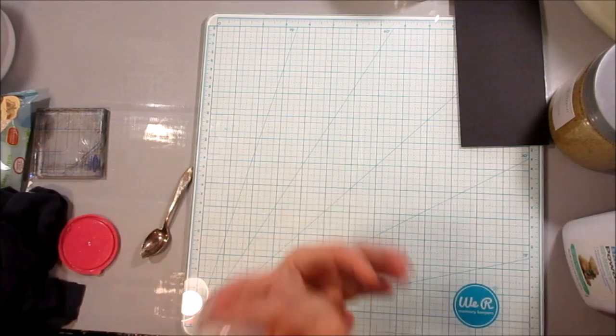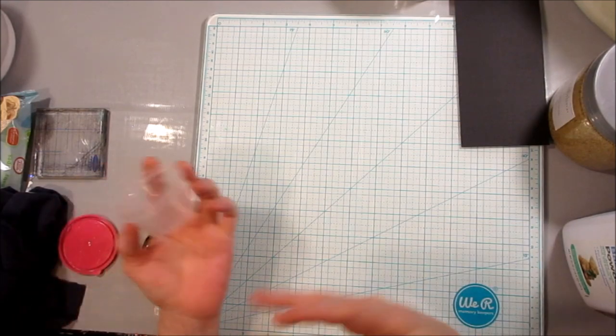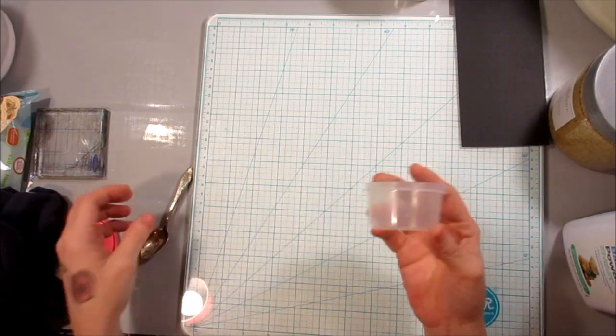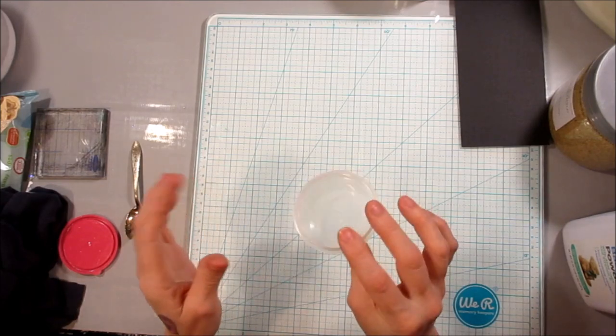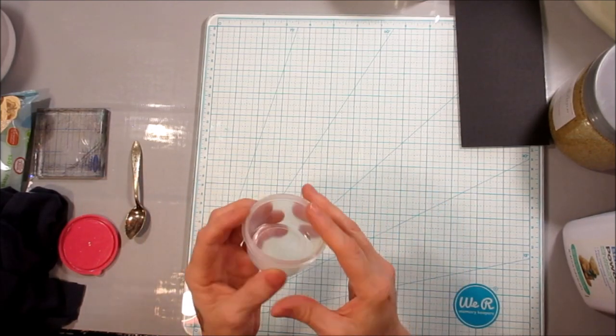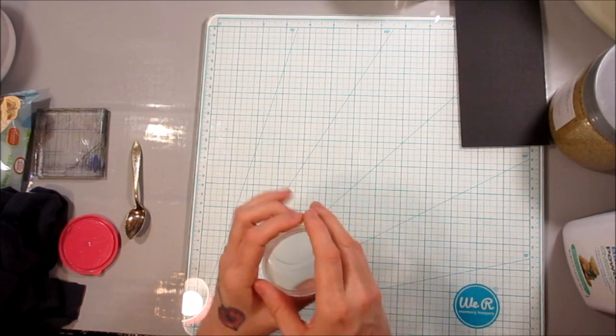It means basically that whatever you're using to measure with is your part. So this is going to be my part. Since it doesn't have an exact measurement, you just call it a part. And if it's something that you're measuring that you kind of know how to measure, you can kind of do it that way, where whatever you use becomes your measuring cup.